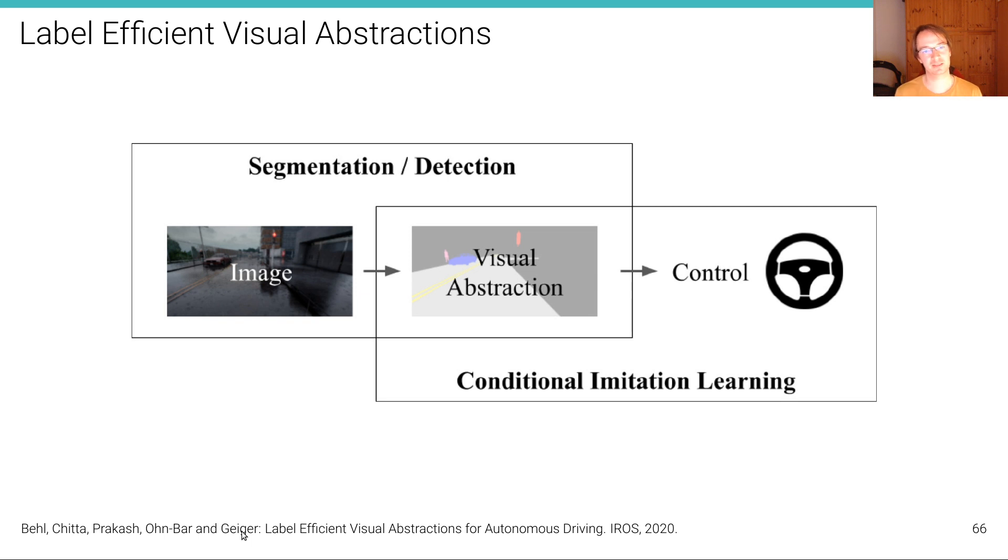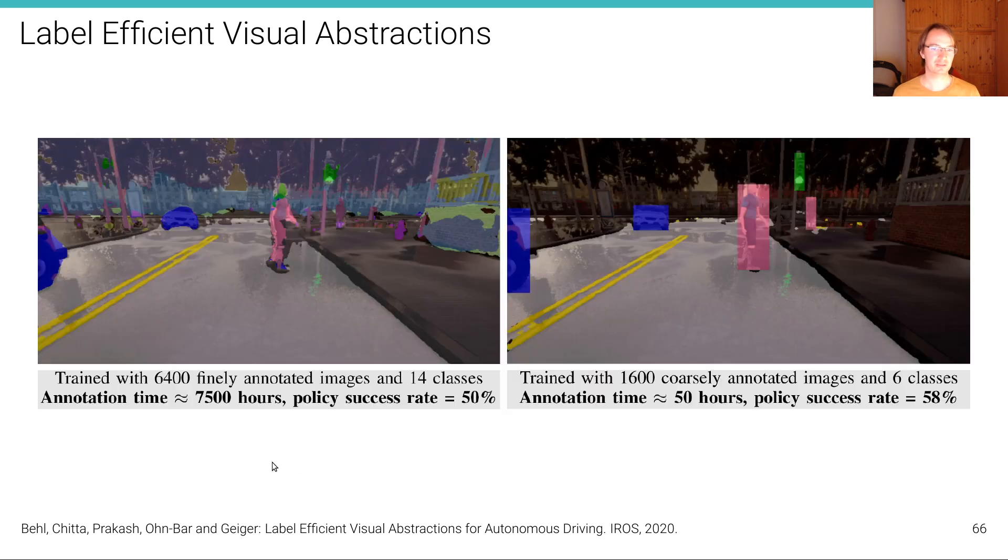One thing that we have done—a couple of projects in this area—one thing we have looked at is what is a good intermediate representation for learning end-to-end driving policies. And we found that it's actually more important to annotate the right parts rather than providing a very detailed semantic annotation as people typically do.